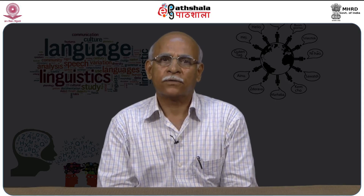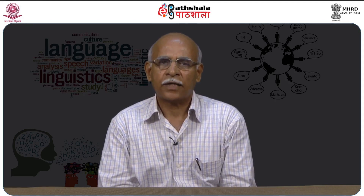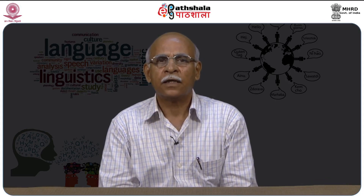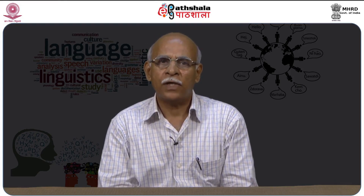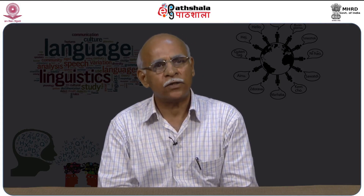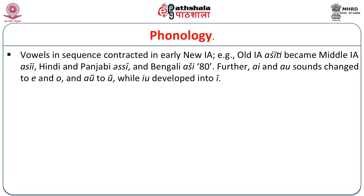We may look at the phonological developments first. As noted in the Middle Indo-Aryan, there is a great amount of simplification of vowels and consonants in phonology. In the Middle Indo-Aryan, vowels in sequence contracted in early New Indo-Aryan. For example, Old Indo-Aryan Asiti became Middle Indo-Aryan Asi, whereas Bengali Asi, meaning 'eight'.